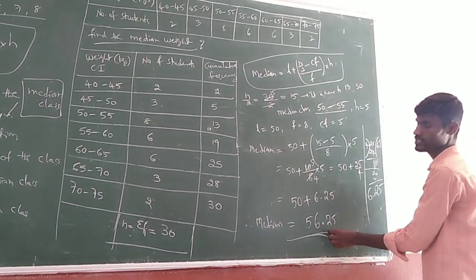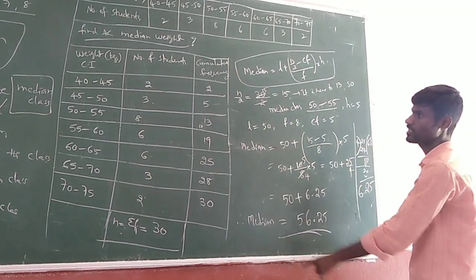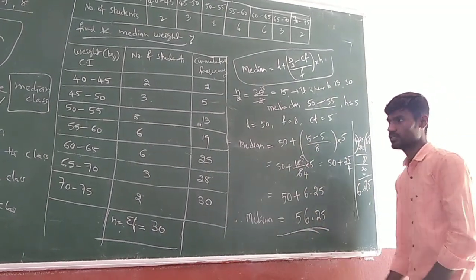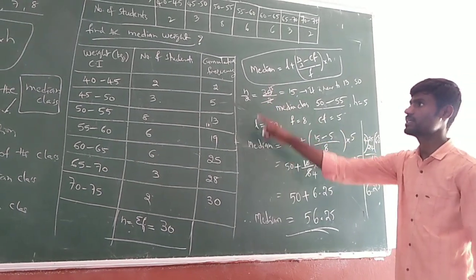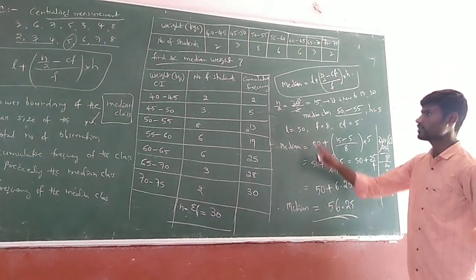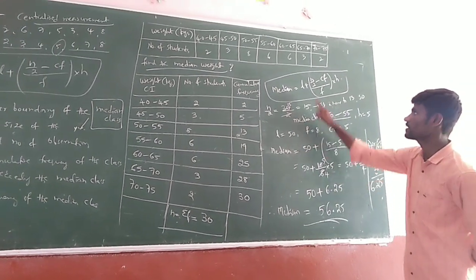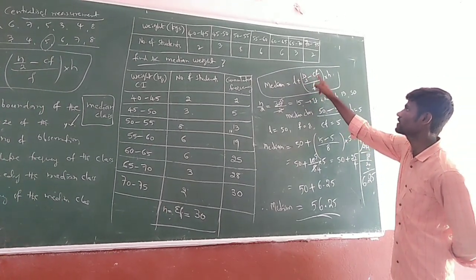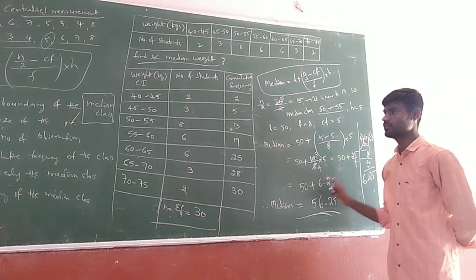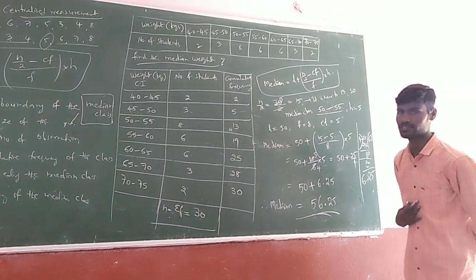So the median is 56.25. Remember, this is the way of finding the median for grouped data. Students, do problems regarding median and try to identify the values of especially these terms: L, N by 2, Cf, F, and H by this method. Then only we can get the exact answer. Thank you.